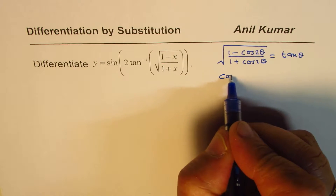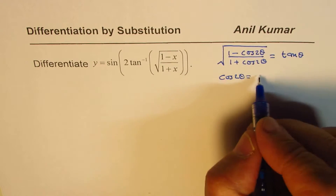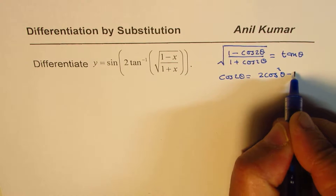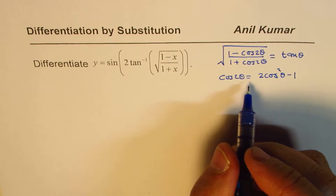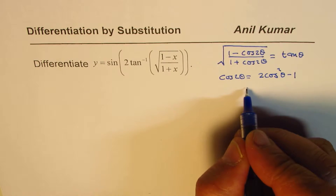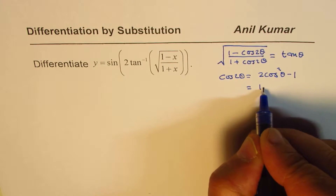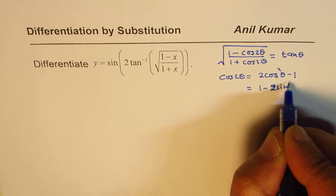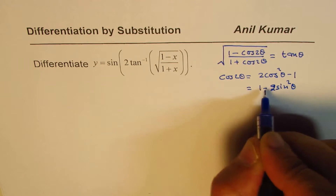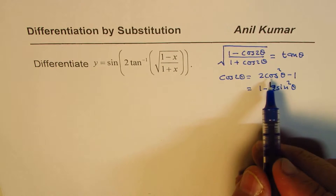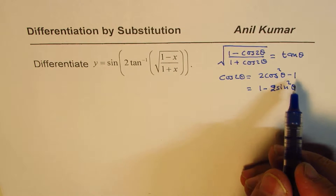We know cos 2 theta could be written as 2 cos squared theta minus 1. The other way is we could write this as 1 minus 2 sine squared theta. There is another way also, which is cos squared theta minus sine squared theta.